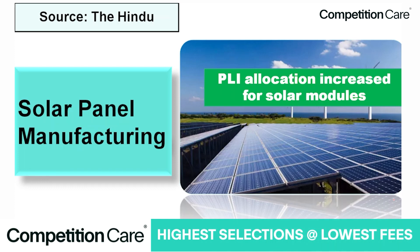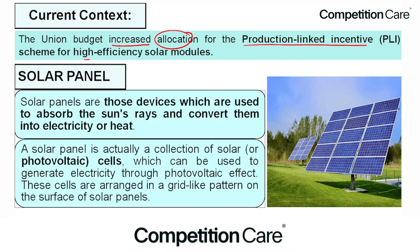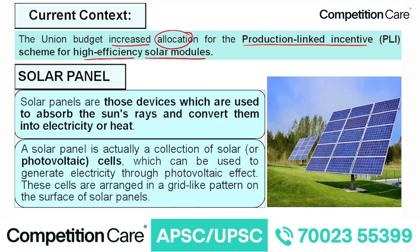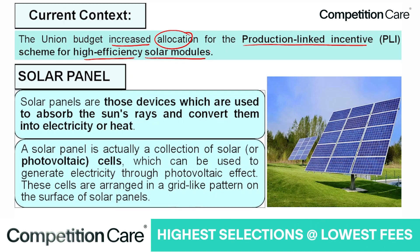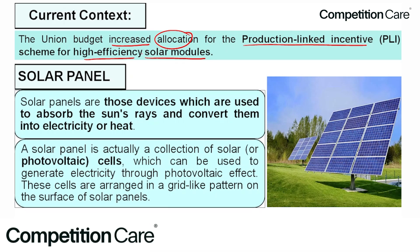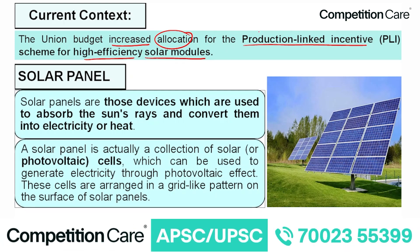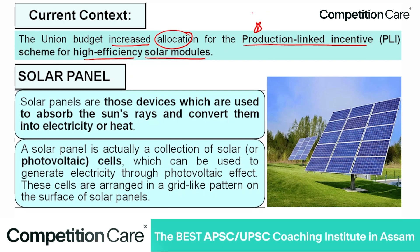The current context is that the Union Budget increased allocation for the Production Linked Incentive (PLI) scheme for high-efficiency solar modules. We will discuss the renewable and green energy budget, where a major chunk has been allocated for this sector.